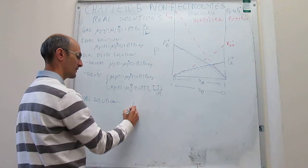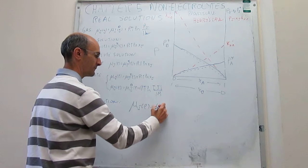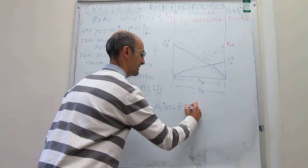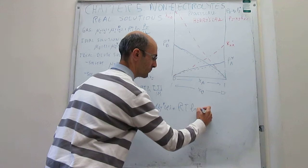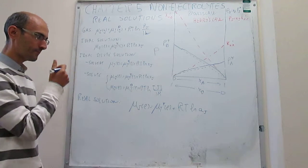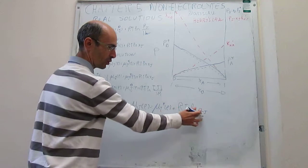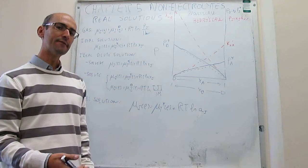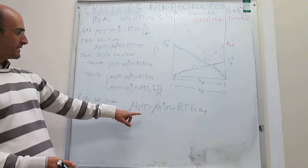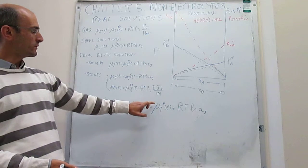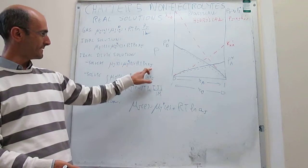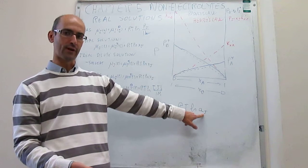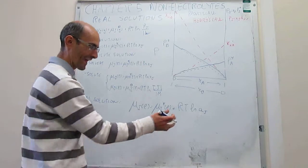The chemical potential of J is going to be equal to the chemical potential of J when pure, plus RT times the natural log of A sub J. This quantity A sub J is what we call activity. Activity is just an effective measure of concentration — essentially an effective concentration analogous to the mole fraction.